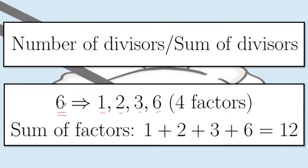There are no other positive integers other than these 4 that 6 is divisible by. Now, the sum of divisors is very simple — just add all the factors. So 1 plus 2 plus 3 plus 6, and this gives us 12.